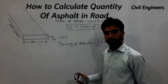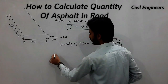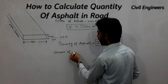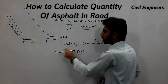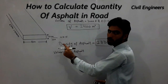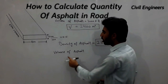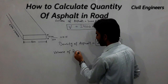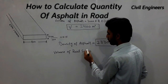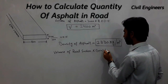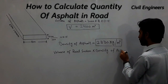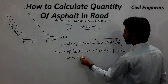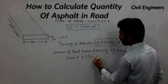Now I will find out the mass of the asphalt. The volume of the road section is 2400 cubic meters. We multiply the volume by the density of the asphalt: 2400 multiplied by 2330.